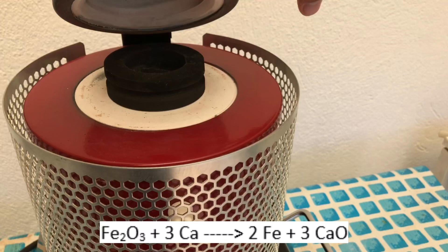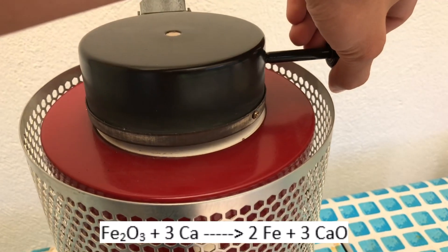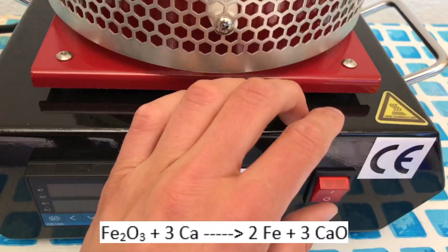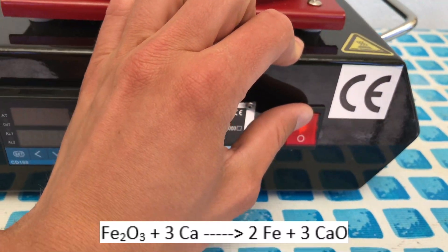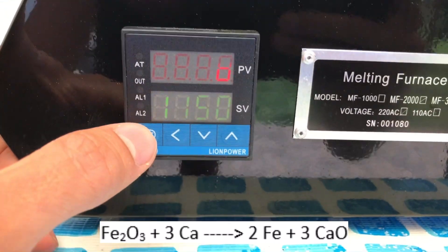The reaction which is taking place will be similar to the one shown here. Iron oxide reacts with calcium, which is the less noble metal, to form elemental iron and calcium oxide. We however are not using iron oxide because iron as a product, well, it would be boring.